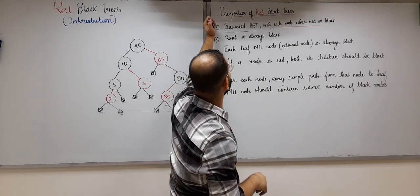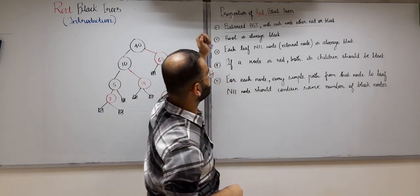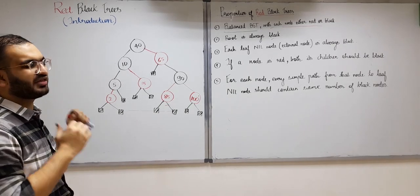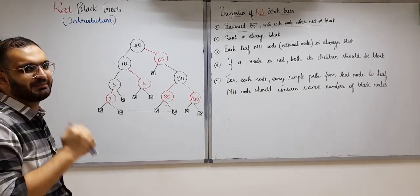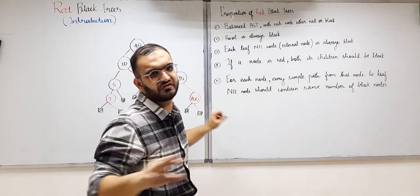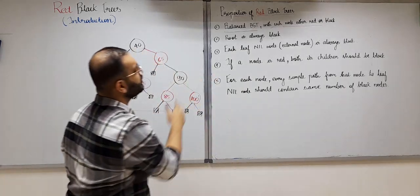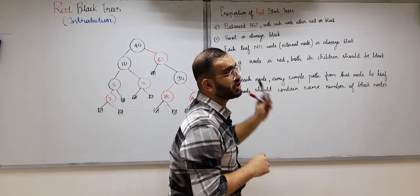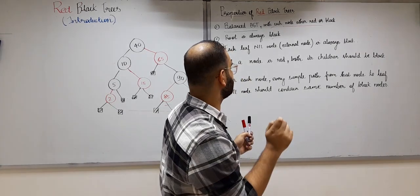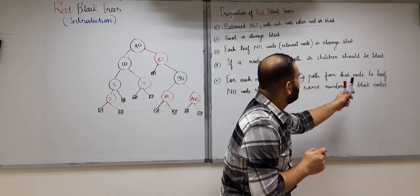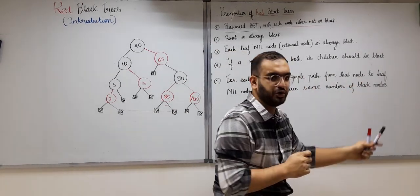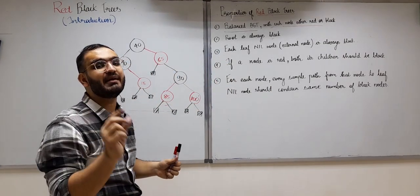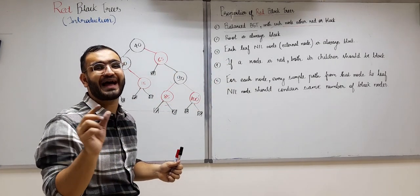Now is this tree following all four properties? Yes, it is following all four. So we can say it is a red-black tree. We haven't seen the fifth property yet. The fifth property says: for each and every node, every path from that node to the leaf nil node should contain the same number of black nodes.